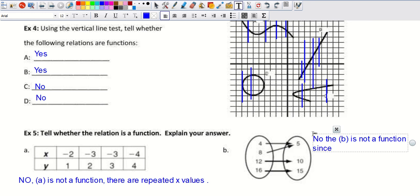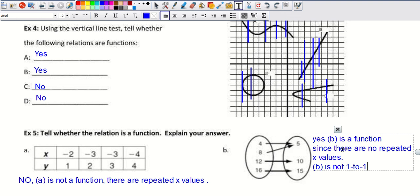Actually, the answer here is yes. Yes. B is a function. I saw the double arrow here and I just thought to myself, no. But yes, it is a function. And there are no repeated X values. However, B is not one-to-one since it has repeated Y values.